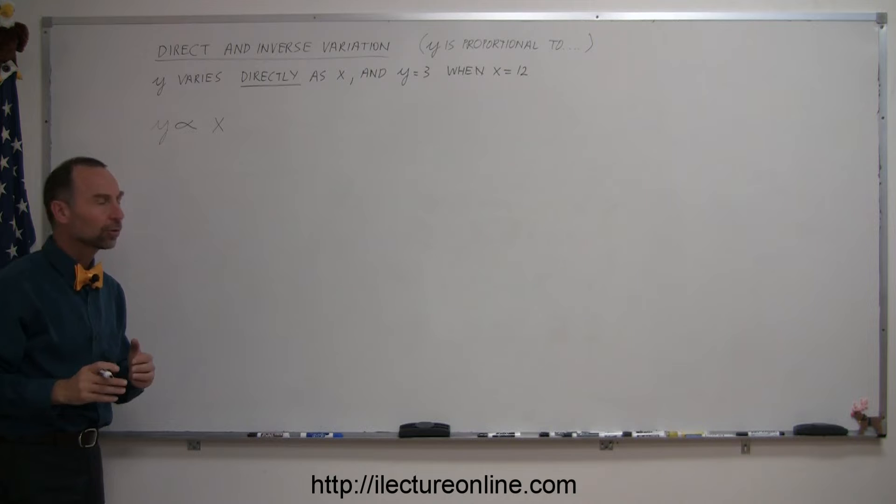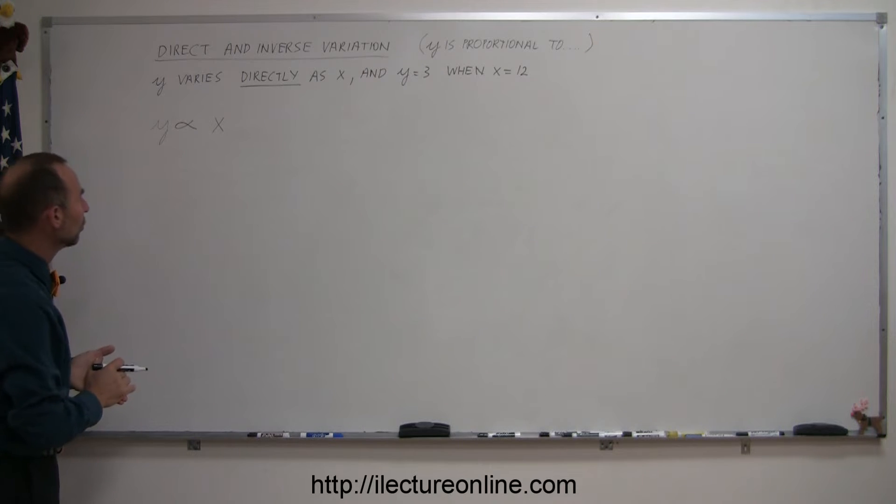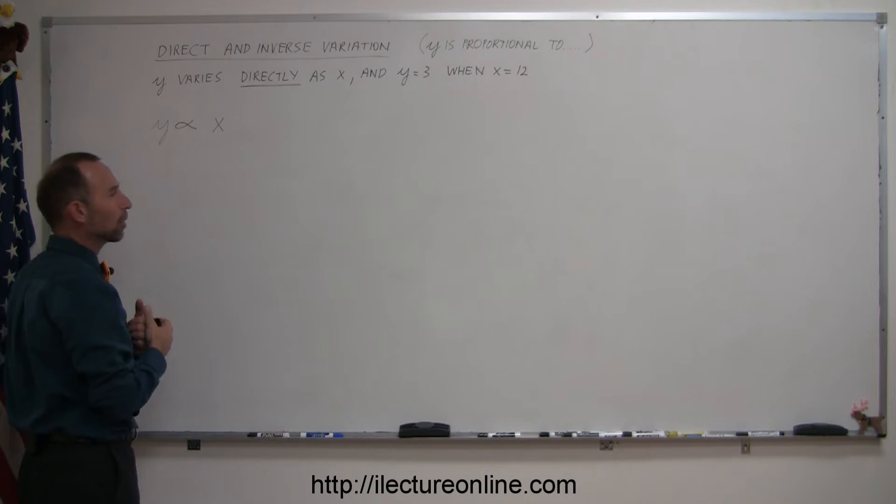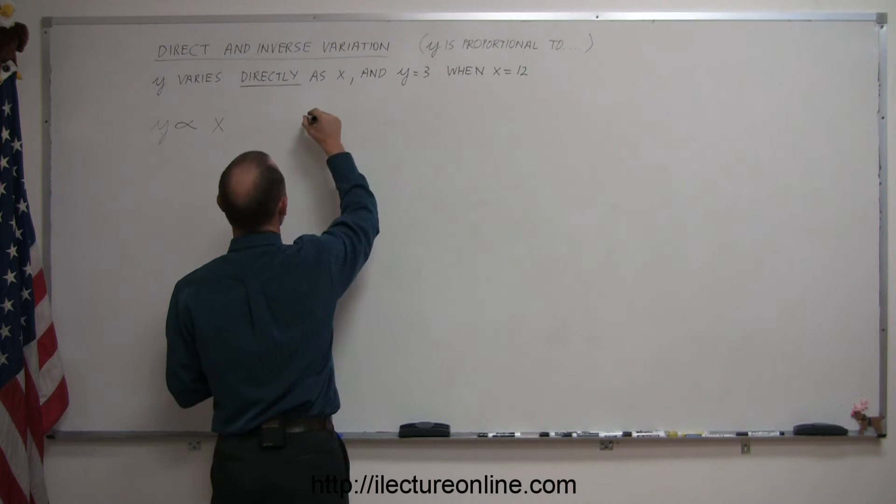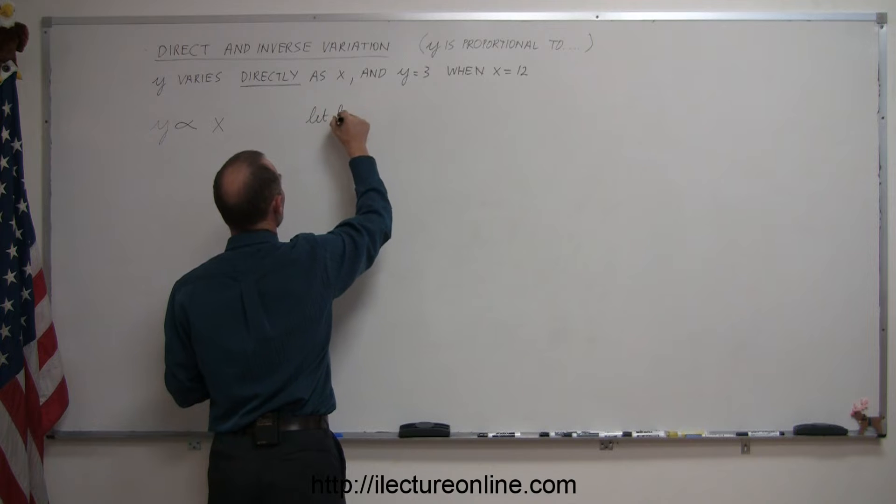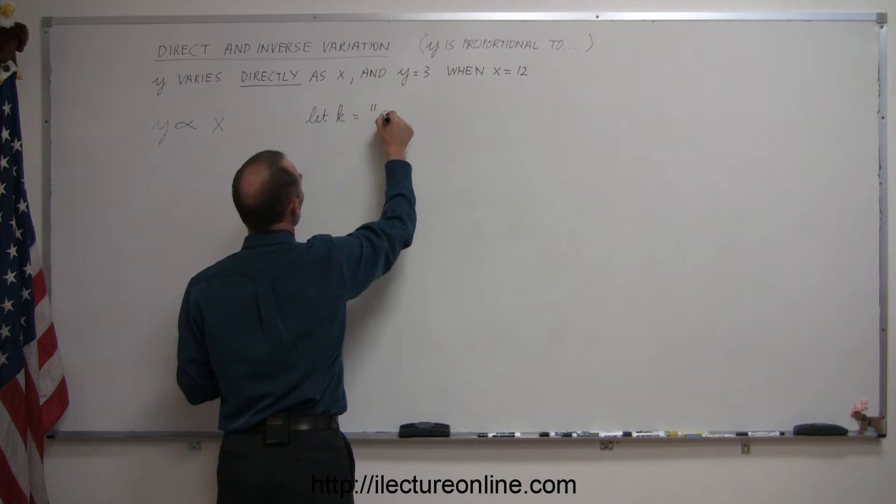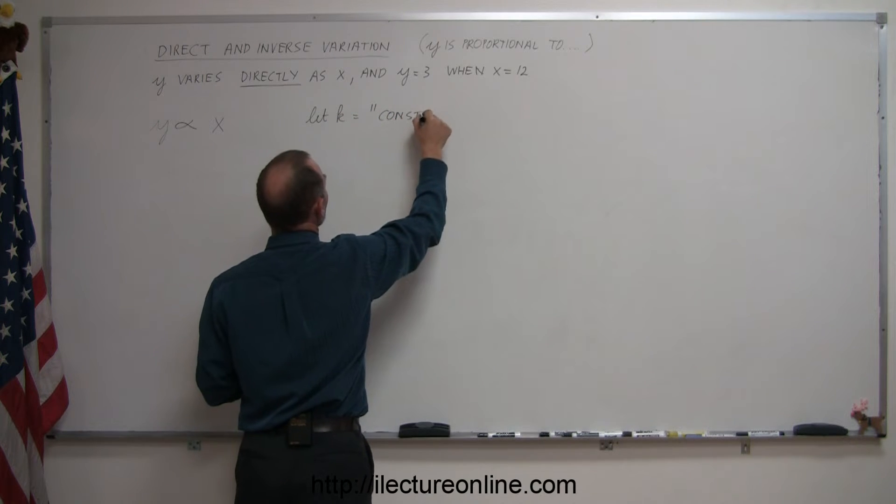And so in order to turn that into an equation, we have to use what we call a constant of proportionality. And we use typically the letter k for that. So let k equal the constant of proportionality.